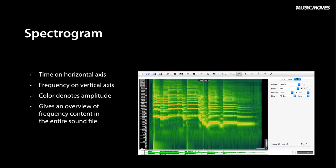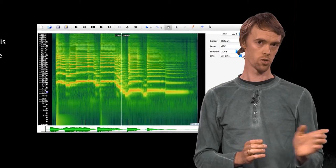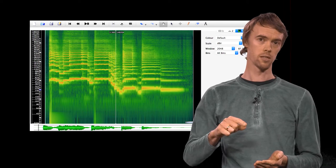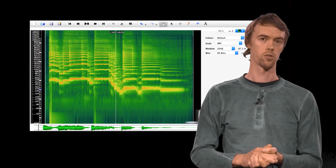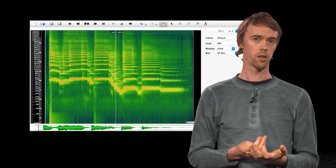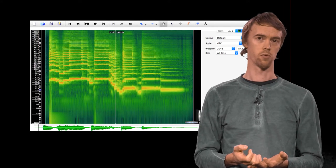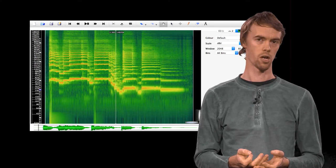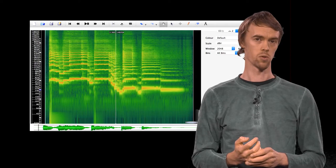A spectrogram representation shows how the frequency content evolves over time. The horizontal axis shows time and the vertical axis shows frequency, from the bass on the bottom to the treble at the top. Amplitude is shown by color. The figure on the right shows the same saxophone melody and how the fundamental frequency and overtones change over time. Let's listen to it.